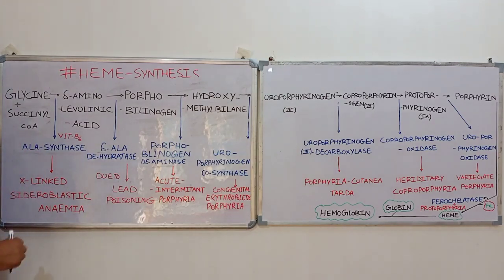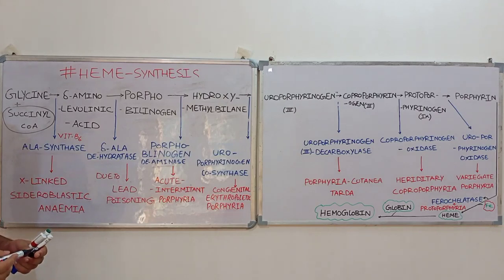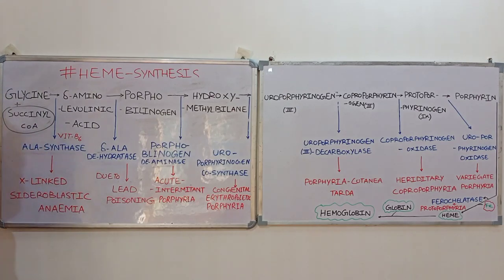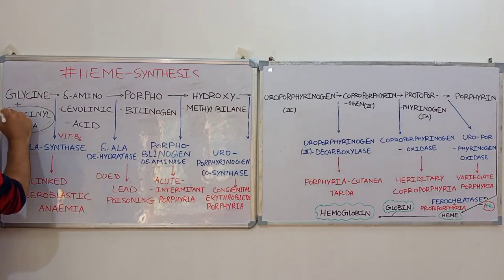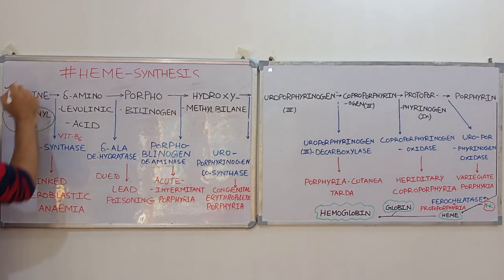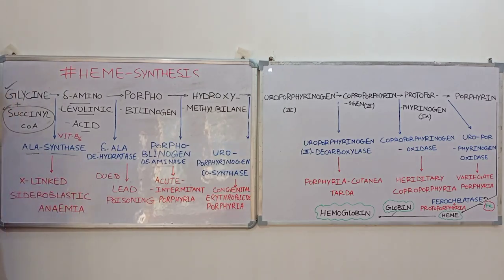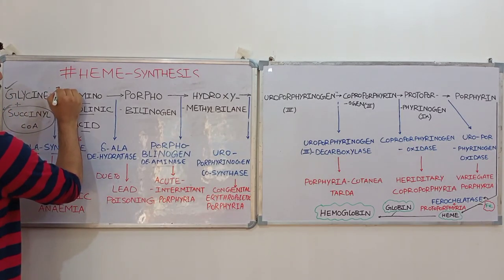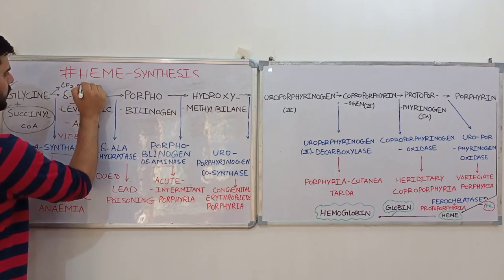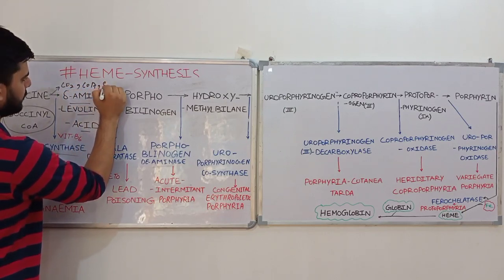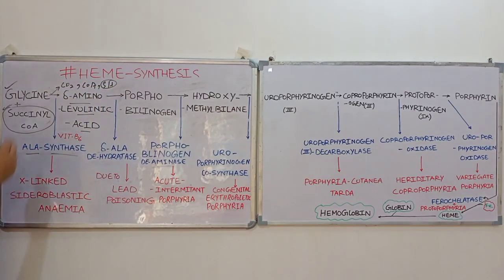First, we have a molecule of succinyl coenzyme A. Succinyl CoA is the product of the Krebs cycle, and the Krebs cycle takes place in the mitochondria, therefore the first step takes place in the mitochondria. During this step, succinyl CoA combines with glycine and gets converted into delta-aminolevulinic acid (delta-ALA) in the presence of the enzyme ALA synthase. During this step, a molecule of CO2, coenzyme A, and a sulfahedral molecule are released.